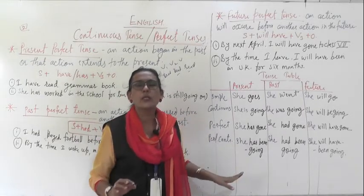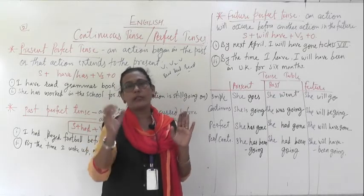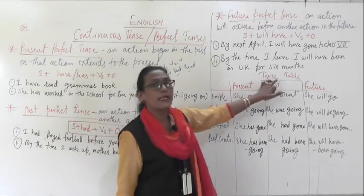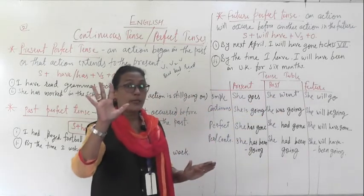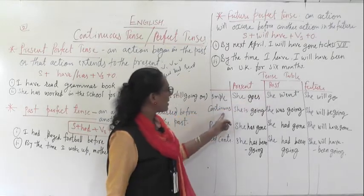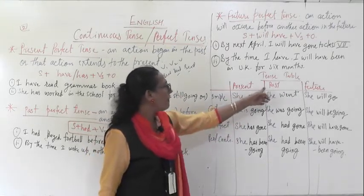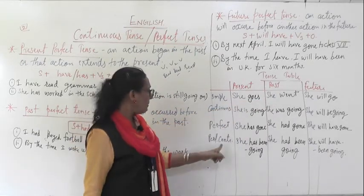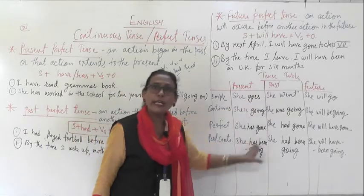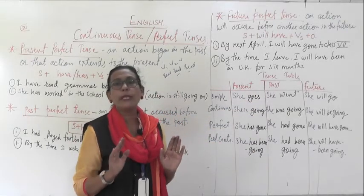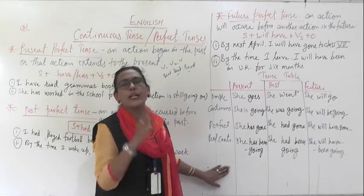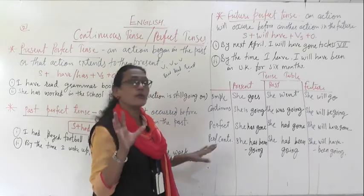In short, I have written a tense table to summarize lessons 10 and 11. The tense table has present, past, and future columns with four sub-parts each: simple, continuous, perfect, and perfect continuous. Write all the structures in your notebook. Looking at the table will give you the whole idea of what we have learned.